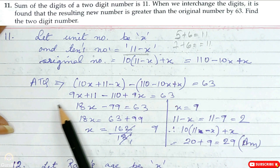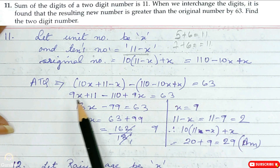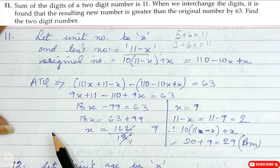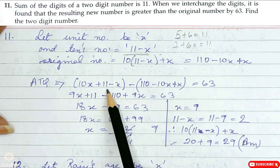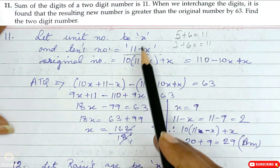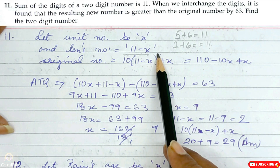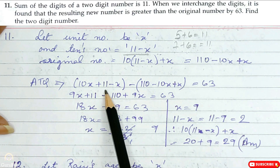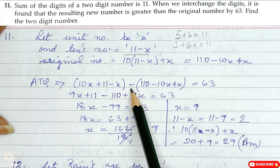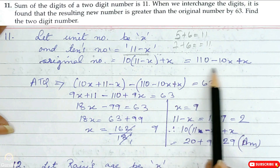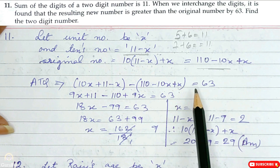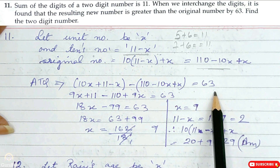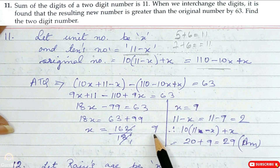According to the question, if we interchange the digits the resulting new number is greater than the original by 63. After interchanging, tens = x and units = (11 minus x), so the new number is 10x plus (11 minus x). The equation is: [10x plus (11 minus x)] minus [110 minus 10x plus x] is equal to 63.